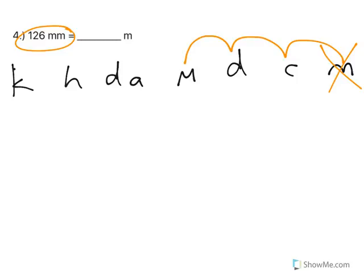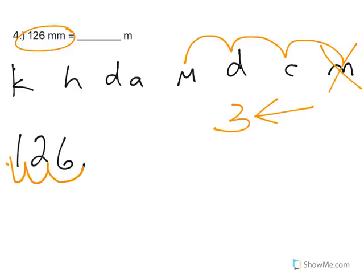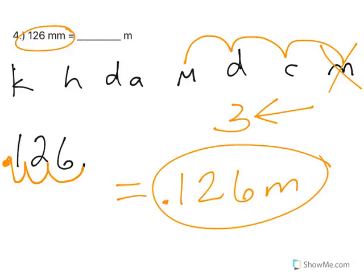One, two, three places to the left. So I've got my 126 with my decimal point at the end. And I'm moving my decimal. One, two, three places to the left. New decimal. So my answer is 0.126 meters.